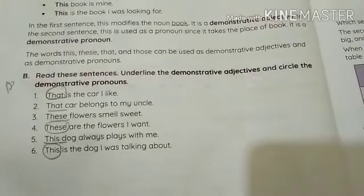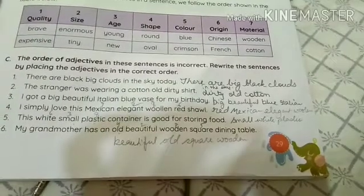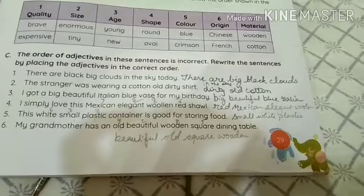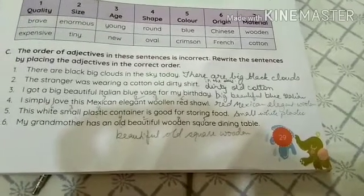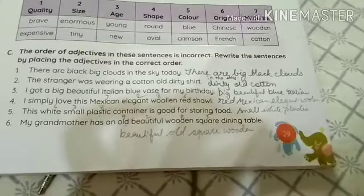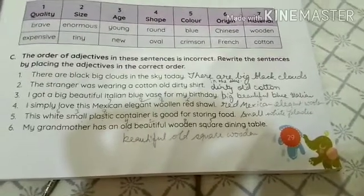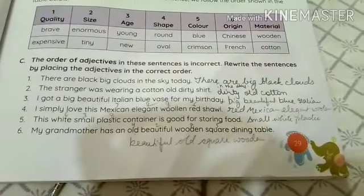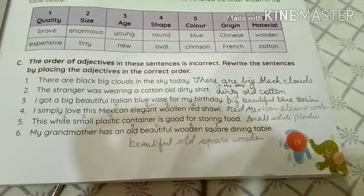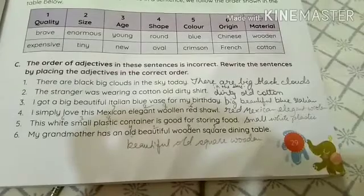'This dog always plays with me' — demonstrative adjective. 'This is the dog I was talking about' — demonstrative pronoun. Coming to page number 29, question C: the order of adjectives in these sentences is incorrect; rewrite them in the correct order. Please write the full sentences. 'There are black big clouds' becomes 'There are big black clouds in the sky today.' 'The stranger was wearing a cotton old dirty shirt' becomes 'The stranger was wearing a dirty old cotton shirt.'